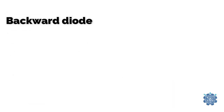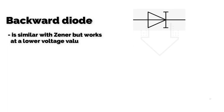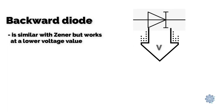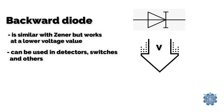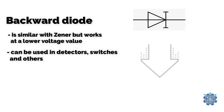Backward diode is similar to Zener but works at a lower voltage value. These diodes can be used in detectors, switches and others.